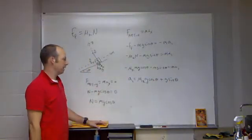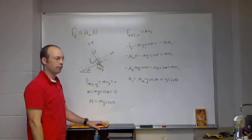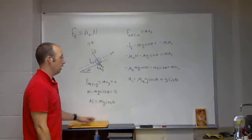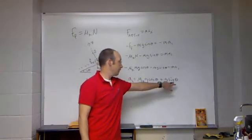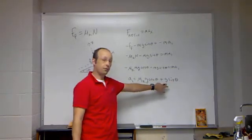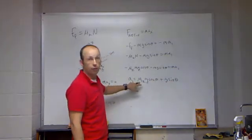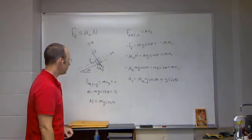mu k g cosine theta plus g sine theta. The mass, the mass canceled. Did I say that? I may have said mass cancelled. This has the right units, right? Sine theta has no units. G has units of acceleration. Mu has no units. So we're okay.